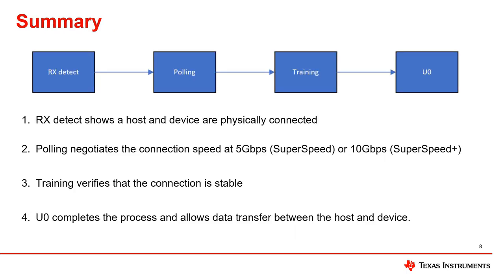Here is a summary of the USB 3.1 enumeration process. These four steps will govern whether the USB 3 connection is established correctly, or whether the link falls back to USB 2 speeds.